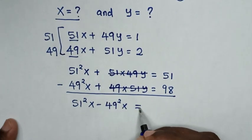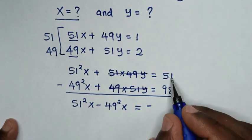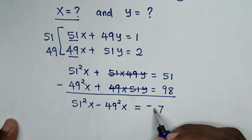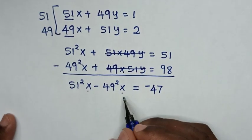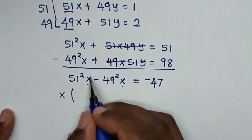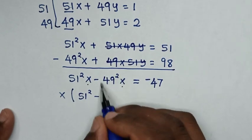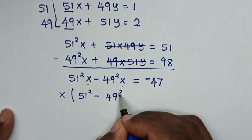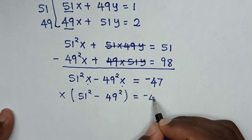Then, it will equal 51 minus 98, which simplifies. In the next step, x is common, so we take x out of the bracket: x times (51 squared minus 49 squared) is equal to negative 47.